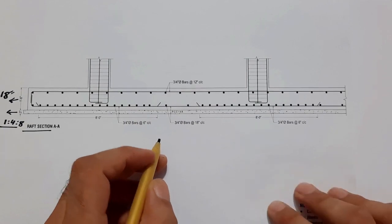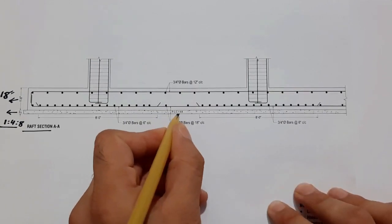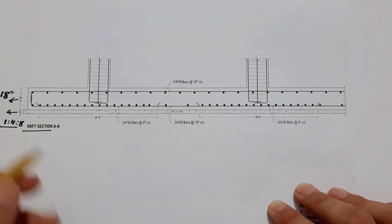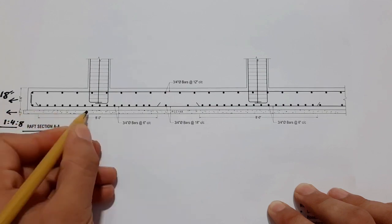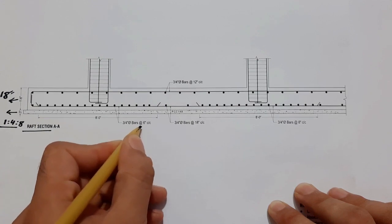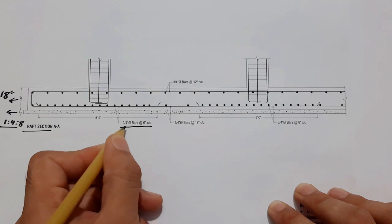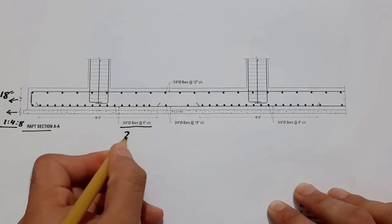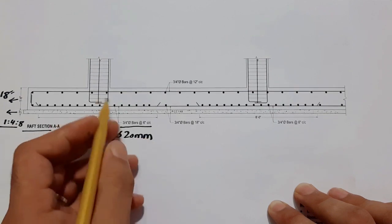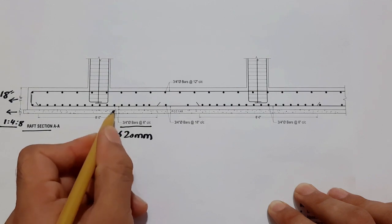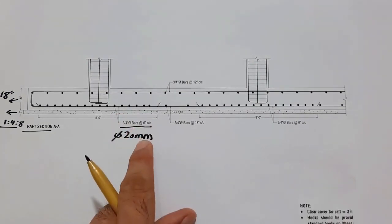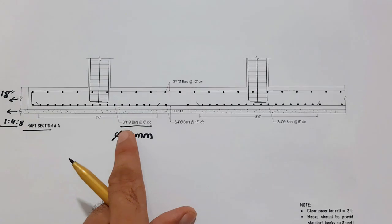Next, come to the steel reinforcement detail. You can see the PCC 1:4:8 ratio. Now you can see steel reinforcement details. At the bottom, we have 3/4 inches diameter bars with spacing of 6 inches. So 3/4 inches means this is 20 millimeter diameter steel for main bars and also for distribution bars.